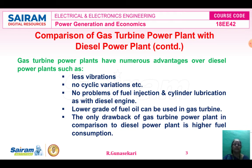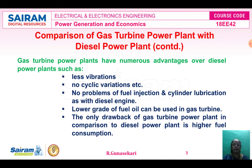Less vibrations — no cyclic vibrations, no problems of fuel injection and cylinder lubrication as with the diesel engine, because the lubricating system is used in the diesel power plant but not in the gas turbine power plant. Lower grade of fuel oil can be used in the gas turbine power plant, which is not possible in the diesel engine.